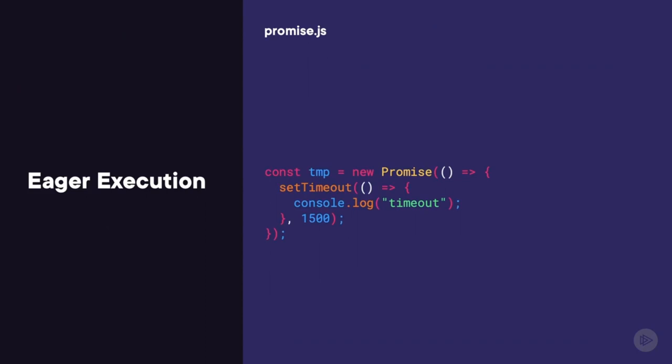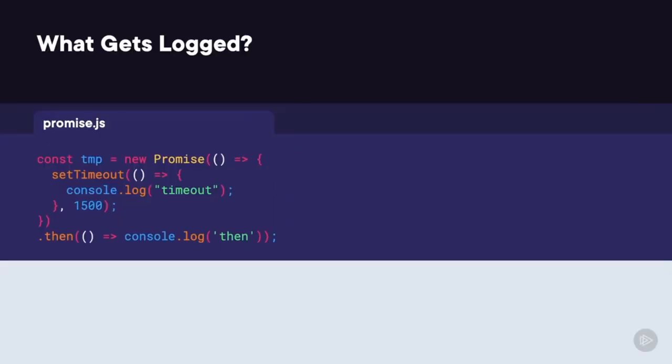If this code were to run, what would we get written to the console? Only the word timeout would get logged — we'd never see the word then on the screen. That's because a promise doesn't take an empty function. It takes a parameter called resolve, and this parameter is a function that the promise will use to resolve its state. We need to decide when we want our promise to be resolved — it probably makes the most sense to resolve it after the timeout has triggered, that is inside the function passed into setTimeout.